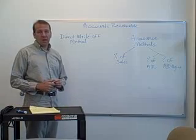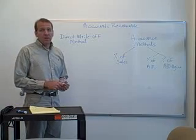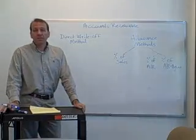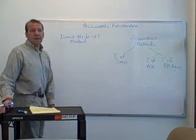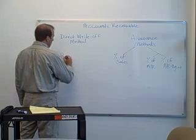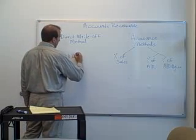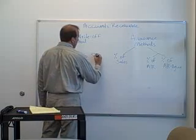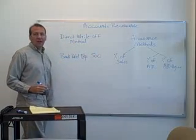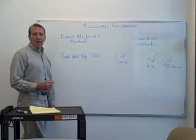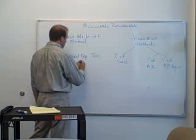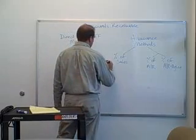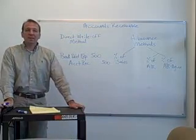The entry in the direct write-off method is very simple. When you call somebody up and find out that they're not going to be paying you, you just write it off. The entry to write that off would be a debit to an expense account — we'll call this bad debt expense. Let's say they owe us $500, so we would debit bad debt expense and then credit accounts receivable for $500. And that would be our journal entry to eliminate that.